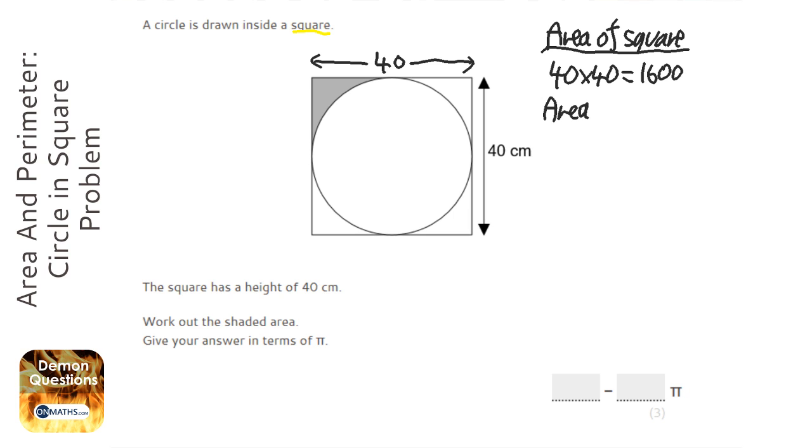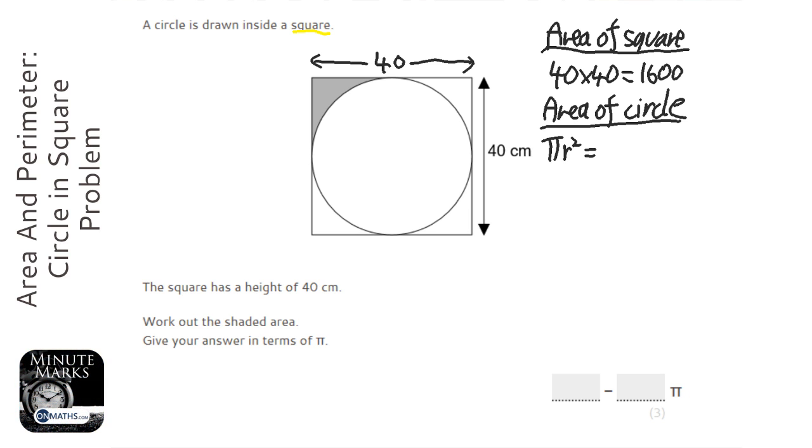OK, so next we're going to do the area of the circle. And the area of the circle is πr². Now r is the radius and we're given the diameter, we're given the full way across the circle. So it's going to be π times 20² because that's half of the diameter. OK, 20² is 2 times 2 which is 4 and then add the two zeros which would be 400π.